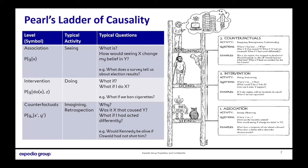Why do you need counterfactuals? Consider Simpson's paradox: when you run an experiment on two sets of customers to determine if a feature improves conversion, and both experiments show a failure, but when you pool all the data and estimate the impact, it might give a totally different result. This happens frequently in business because we do not account for counterfactuals.